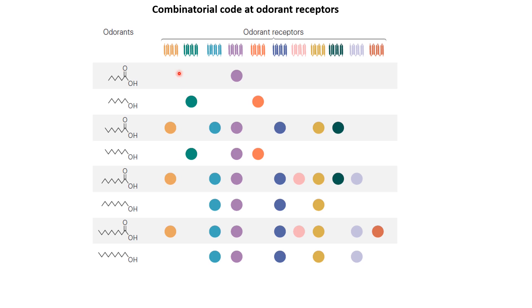With K receptors we can potentially encode 2 to the power of K different odorants by looking at all possible combinations. This combinatorial coding allows a reasonably finite number of receptors to encode a very large number of odorant molecules.